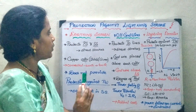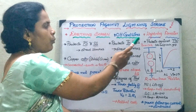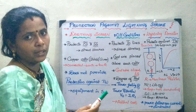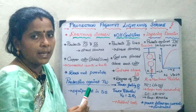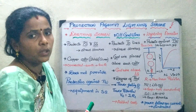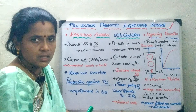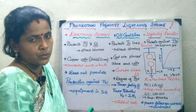Thus we have seen about what are the three types of protective devices to protect against this lightning stroke. In the next class, we will be seeing about the different types of lightning arrester which are in use. Thank you.